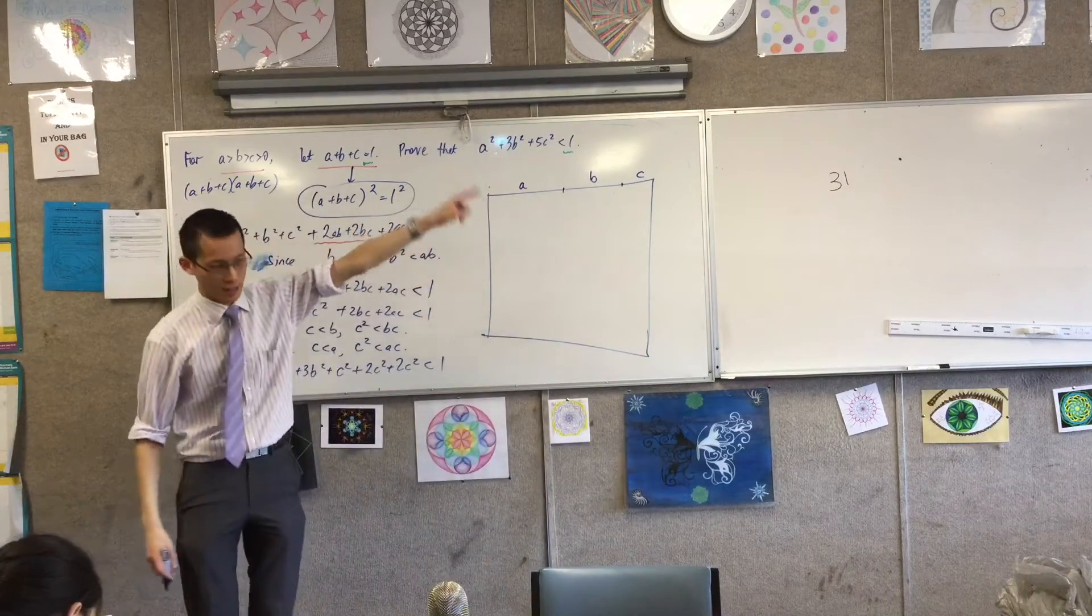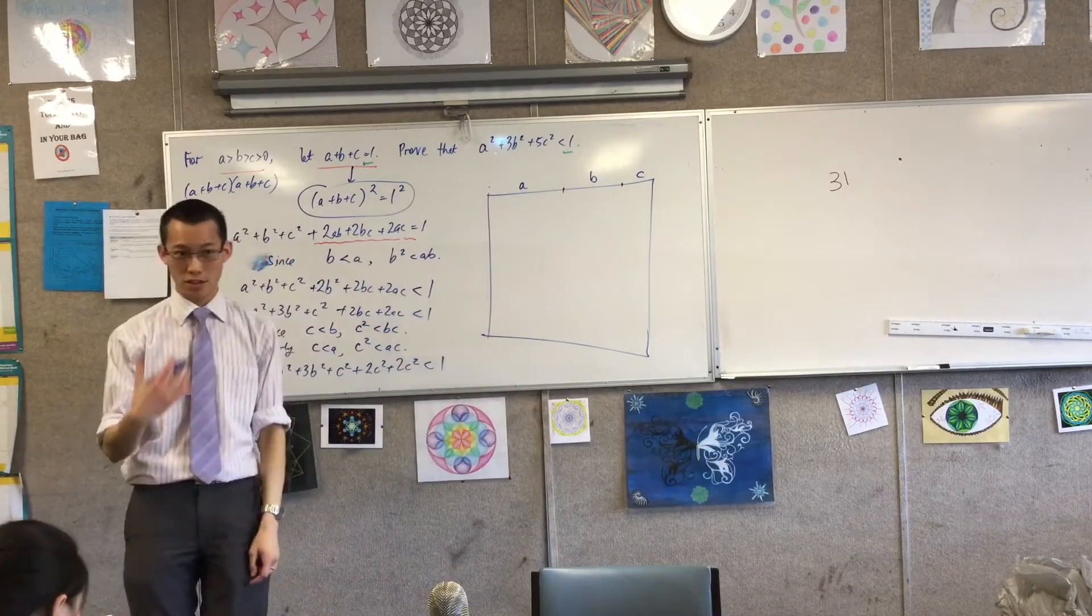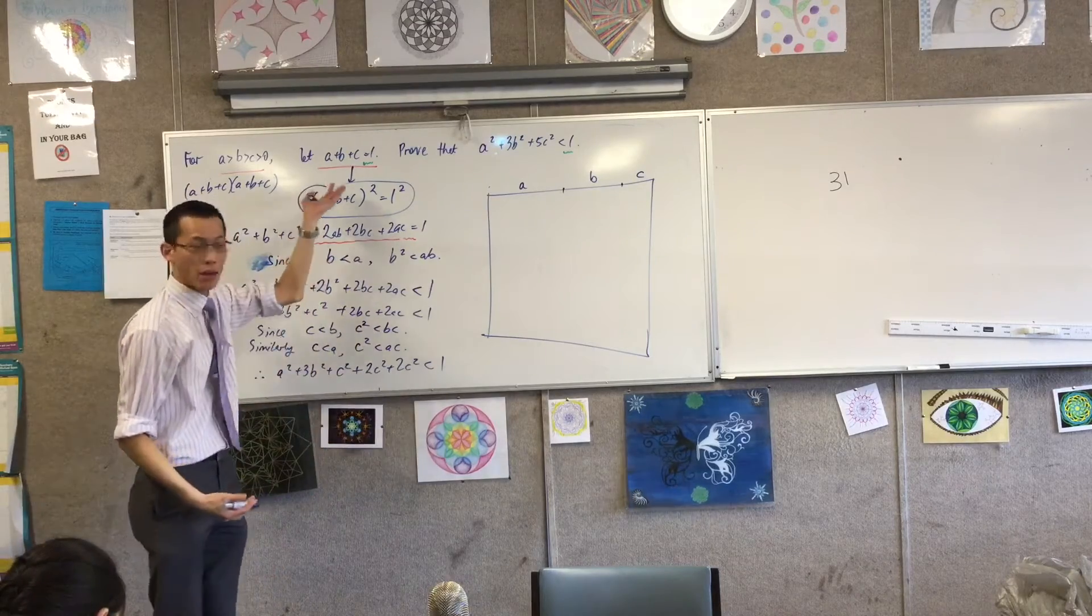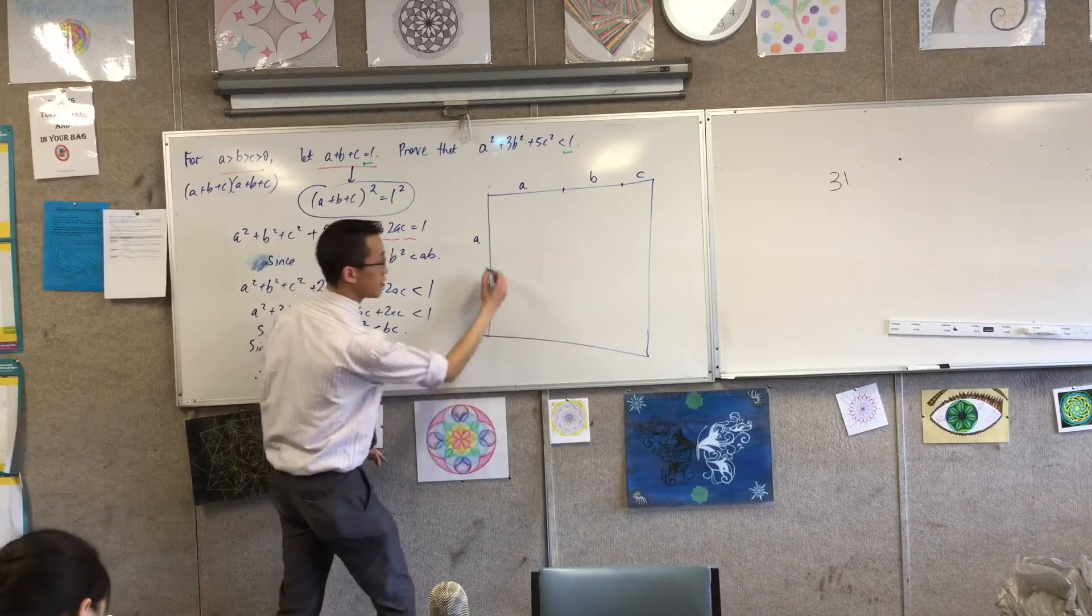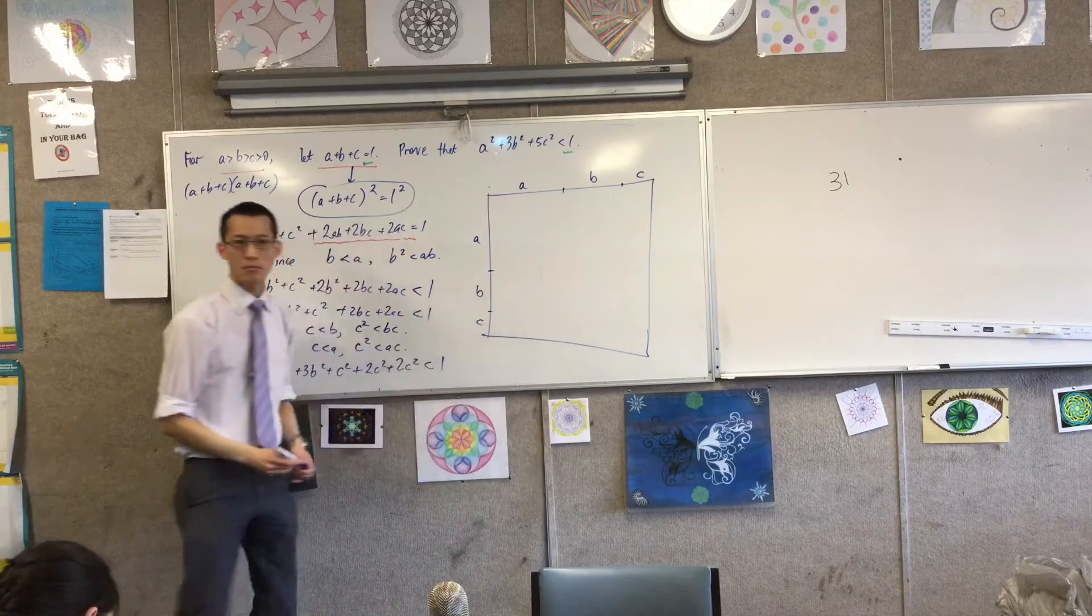a is bigger than b is bigger than c, they're all positive. Now of course this is not just a and b and c, this is a square. So I need a here as well, and something like this, there's b and there's c.